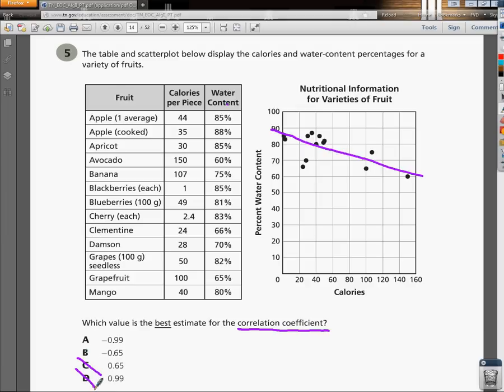Now, the closer it is to an absolute value of 1 means that the data is very close to that line, means almost perfectly straight.